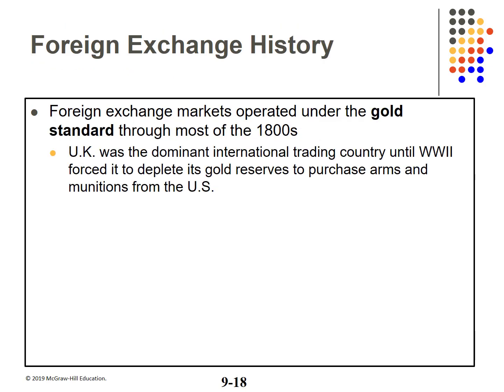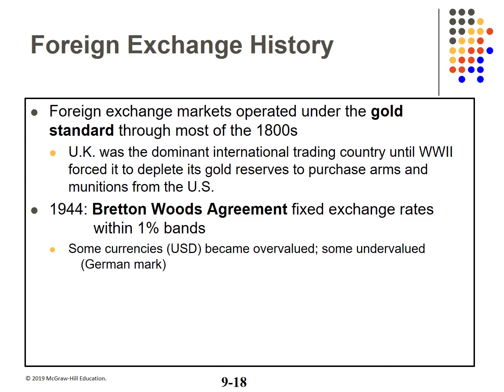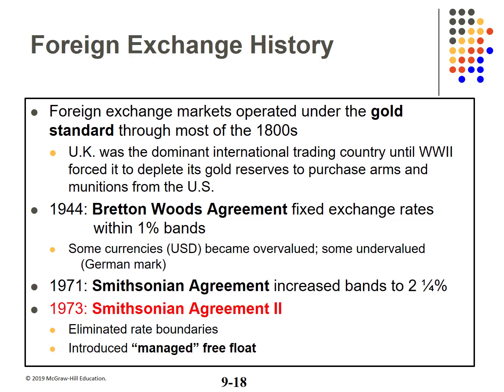Looking at the history of foreign exchange: most markets operated under the gold standard through the 1800s. The United Kingdom was the dominant international trader until World War II, which caused them to deplete their gold reserves. In 1944, the Bretton Woods Agreement fixed exchange rates within 1% bands, but this caused some currencies to be overvalued and some undervalued. In 1971, the Smithsonian Agreement increased the bands to 2.25%. In 1973, it eliminated the rate boundaries, allowing free-floating exchange rates. This introduced managed float — some countries use open market-type procedures to manage their exchange rate.